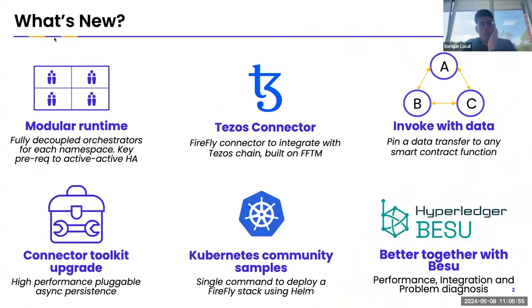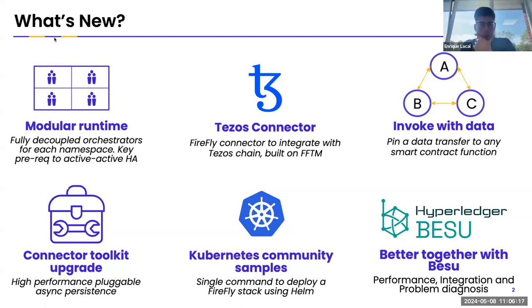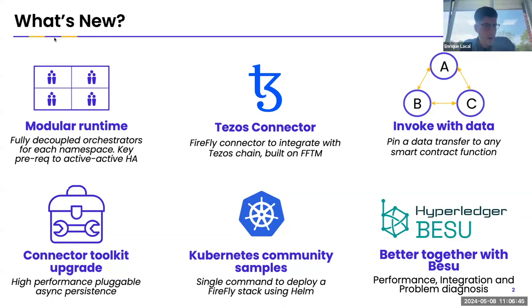So what's new in Firefly? There's been a lot of work to make the runtime a lot more modular. One of the key pieces was decoupling the way orchestrators within Firefly communicate with the blockchain connectors — between Firefly namespaces running in Firefly Core and the different plugins. Nico did a really interesting piece of work to create multiple event streams, so each namespace has its own event stream per blockchain connector instead of sharing one across namespaces. This gives more isolation and is a really good step toward achieving higher availability, which is an issue we've called Active-Active.